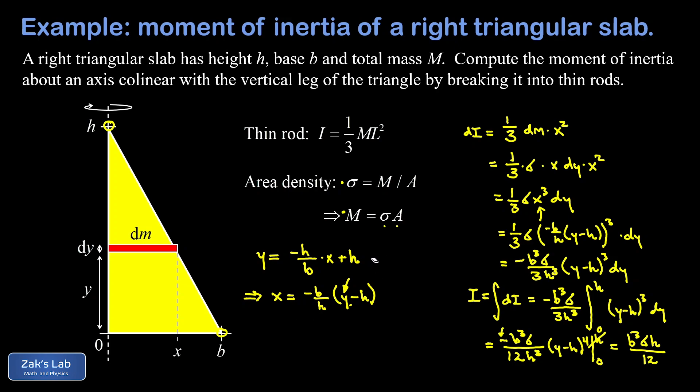Now we can view that as the final answer for this moment of inertia integral, but based on the information we were given - which is the dimensions of the triangle and the total mass - we should be writing the moment of inertia in terms of the total mass instead of the area density.